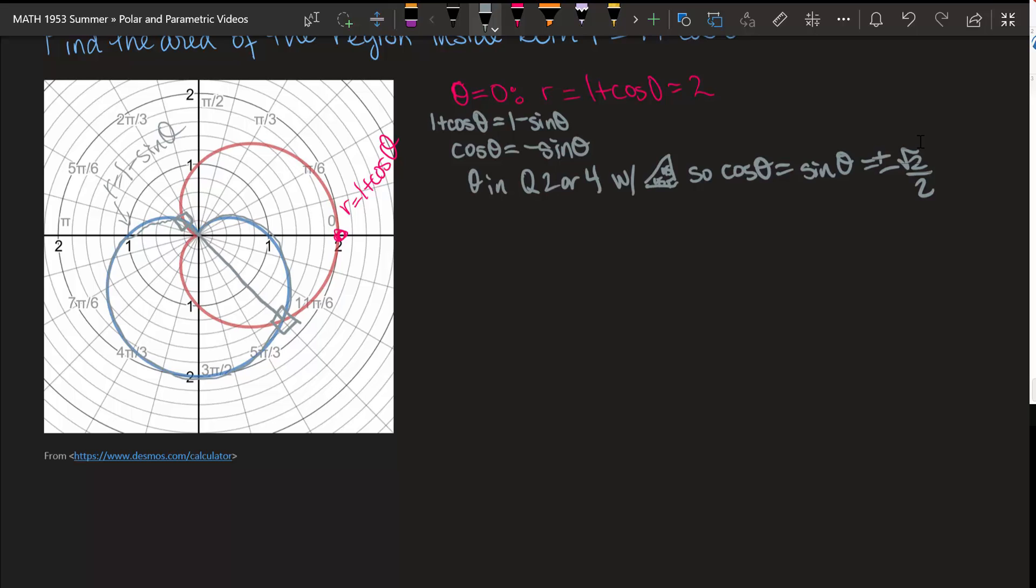In quadrant 2, the angle that's rotated pi over 4 off of the axis would be 3 pi over 4, and in quadrant 4 that would be 7 pi over 4. And if we look back at my image, we can see those are in fact the ones we found.